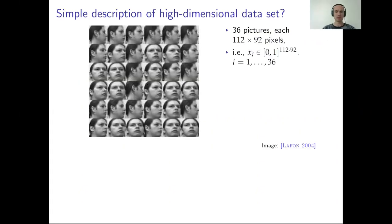As a warm-up, consider this dataset of 36 pictures — 36 data points in approximately 10,000 dimensions, since the pictures have 10,000 pixels. Take a moment to think of a very simple one-sentence summary of the entire dataset. My short summary would be that a head is shown from different angles.